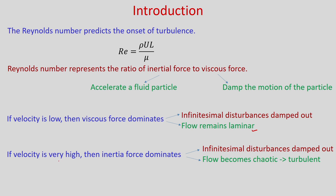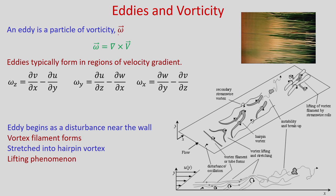But if velocity is very high, inertia force dominates. Infinitesimal disturbances do not damp out and flow becomes chaotic — the flow becomes turbulent. In turbulent flow there are velocity fluctuations, which cause the formation of small swirling motions known as eddies. An eddy is a particle of vorticity ω, where vorticity is defined as the curl of the velocity vector and can be represented in terms of the velocity gradient.